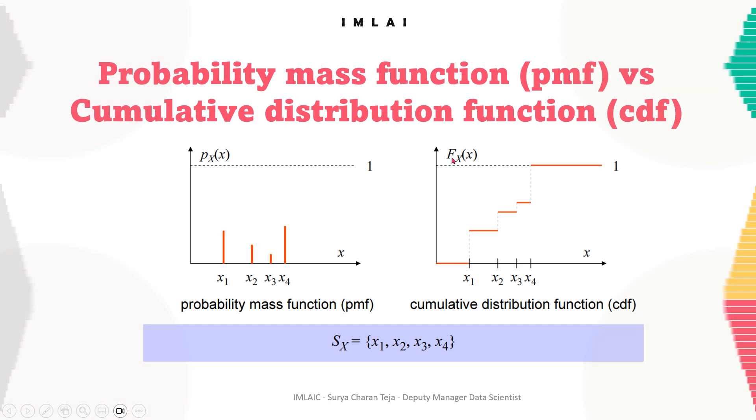This is why we denote it as fx of x, and this is px of x, because this is a mass function and this is your cumulative distribution. The probability mass function and the cumulative distribution function are two different ways to describe the probability distribution of a discrete random variable.